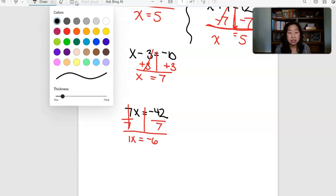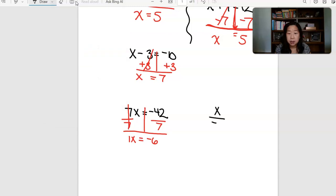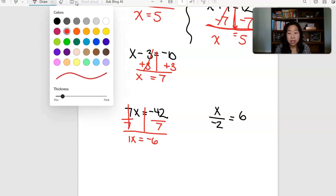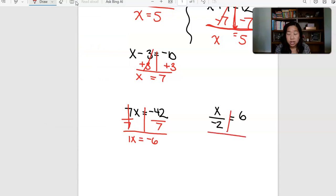You can do the same exact thing with a division problem. So if you have x divided by negative 2 equals 6, we are going to do the same thing, we're going to T-chart. What is the reciprocal of divide? It's going to be multiply. So we're going to multiply both sides by negative 2 because whatever we do to one side we must do to the other. Negative 2 divided by 2 is 1x and then 6 times negative 2 is negative 12.